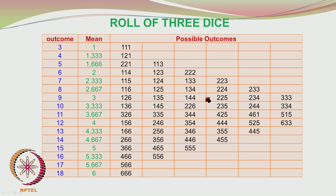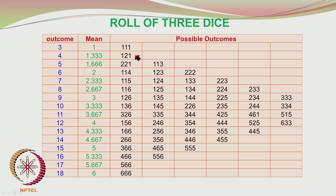Let us see what happens when you have 3 dice — it becomes slightly more cumbersome. You have more occurrences of the mean. The discrete probability distribution tends towards a continuous one as you increase the number of dice, and you can now get more possibilities of the mean. For example, the sum of numbers on the 3 dice can be 4, giving a mean of 4/3 = 1.333. The dice can show 1, 2, 1 in 3 different arrangements.